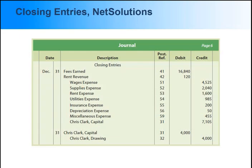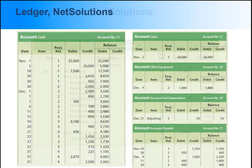The closing entries are recorded in the journal. First, write the heading 'closing entries.' The first step entry closes the two revenue accounts to expense accounts. The second step entry closes owner's capital to owner's drawing. After the closing entries are journalized, they are posted to the ledger accounts.